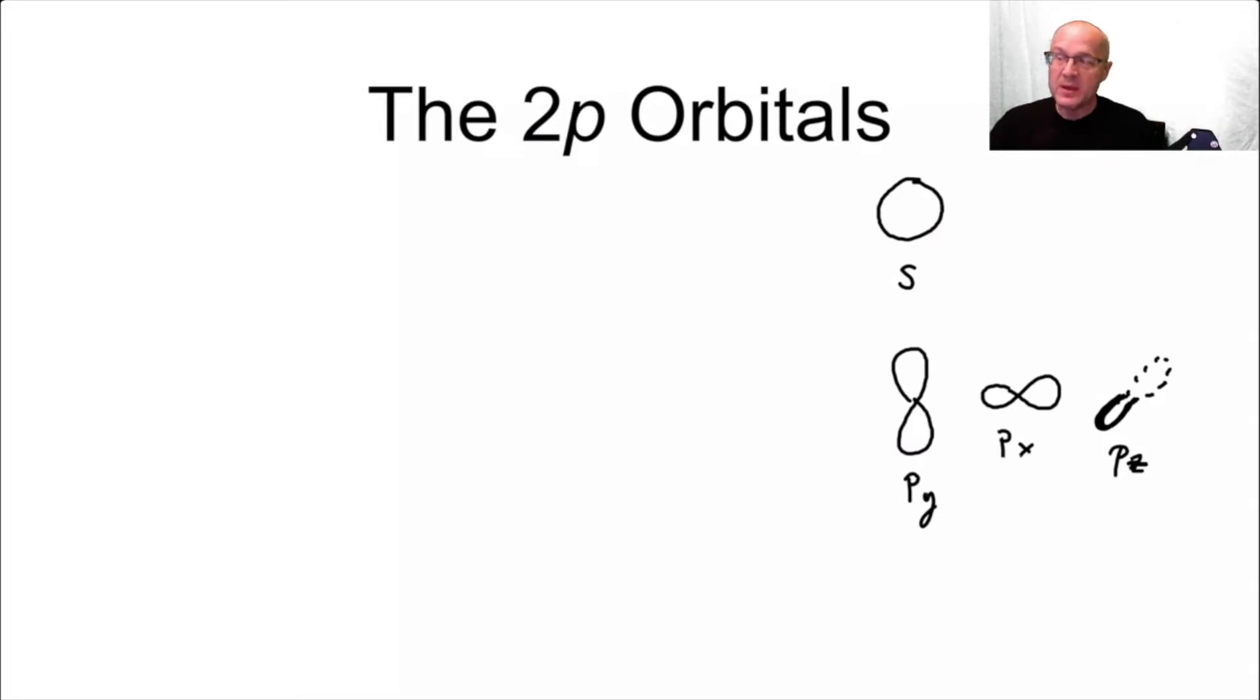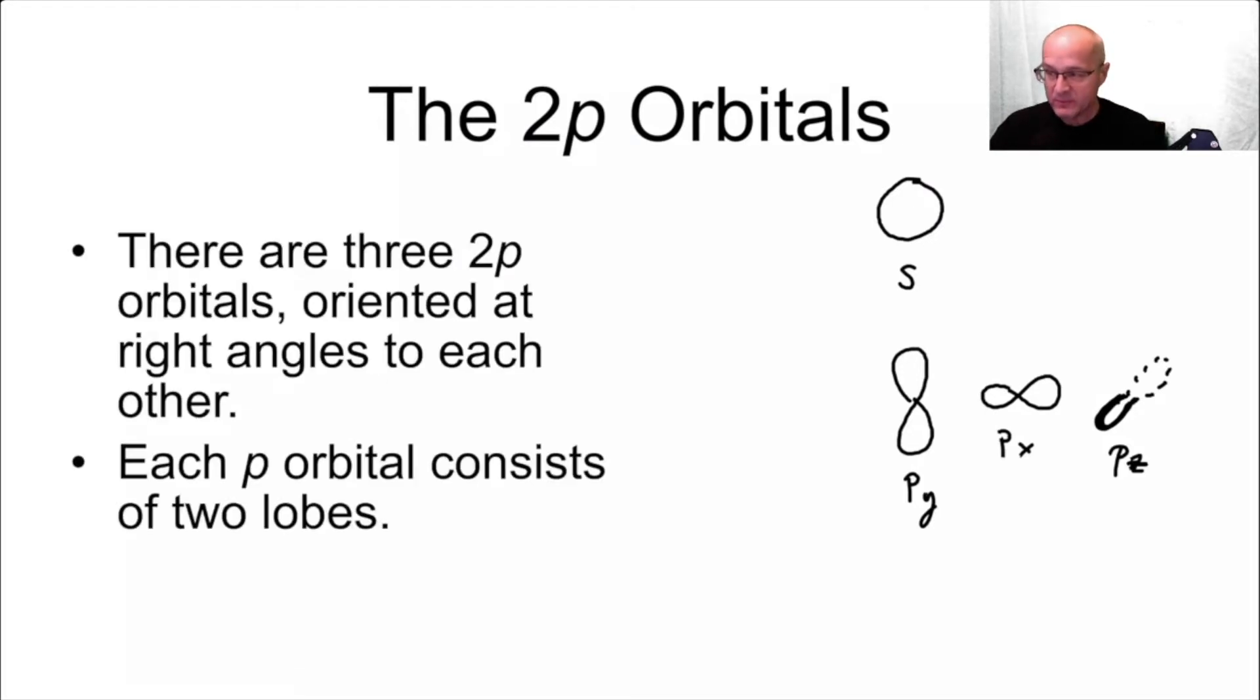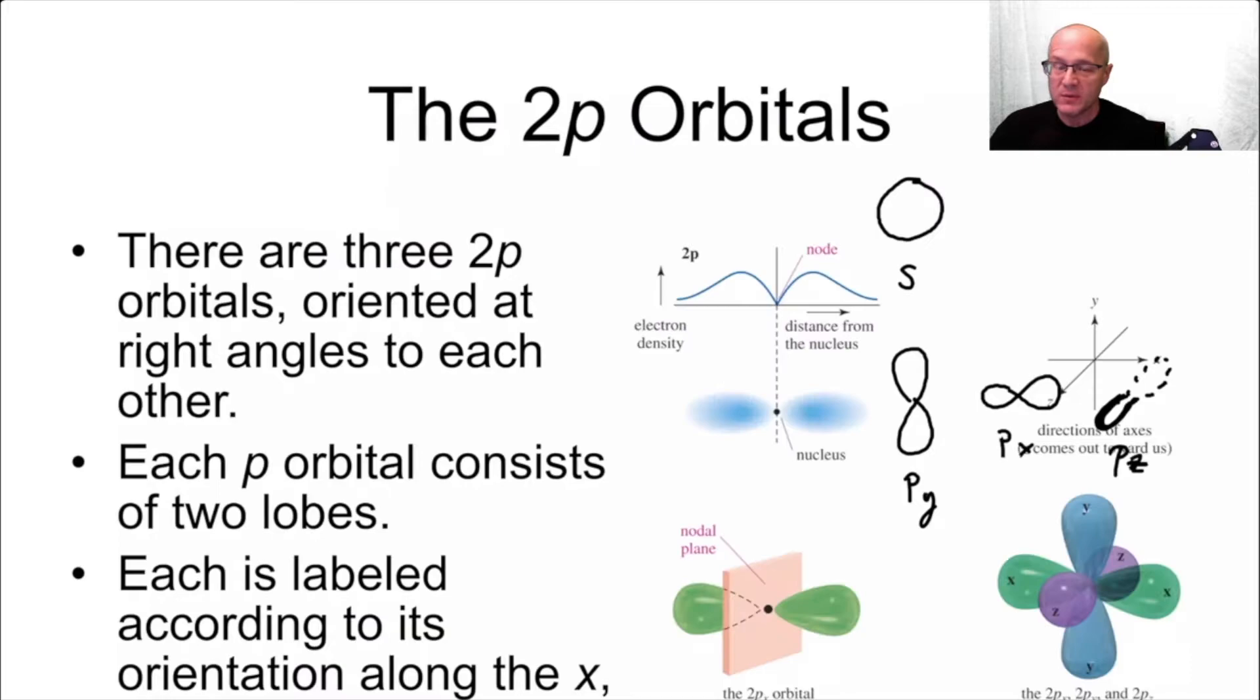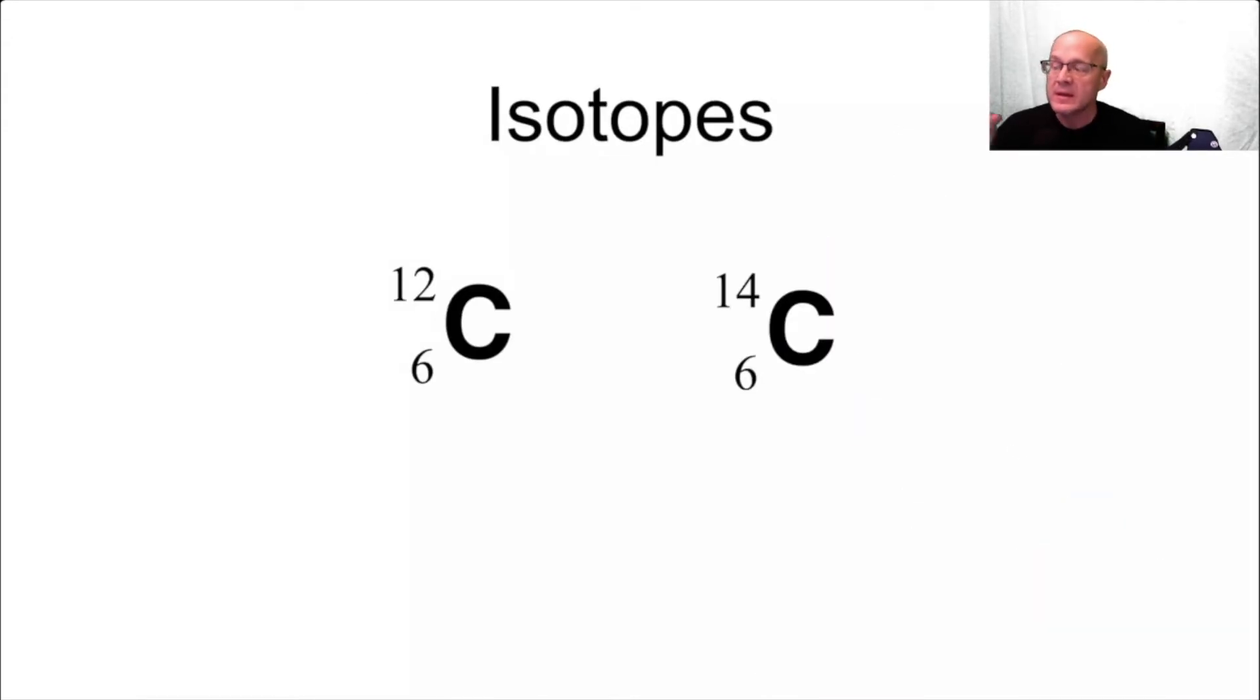There are Ds and there are Fs. You have to know about those. I'm not going to go over them right now, but you do have to know about them. So make sure you review your general chemistry. Here's some nicer drawings the book gave us. Make sure you review your general chemistry to understand what these orbitals look like and how they work.